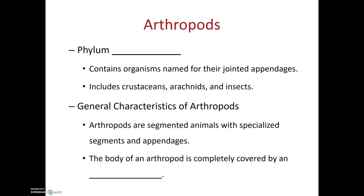The last phylum that we'll talk about in this video is phylum Arthropoda. Arthro means joint or jointed, and pod refers to legs or appendages — so the arthropods are named for their jointed appendages. They have hard outer skeletons known as exoskeletons. These include crustaceans, arachnids, and insects. They are segmented animals with specialized segments and appendages, and the body of an arthropod is completely covered by an exoskeleton.